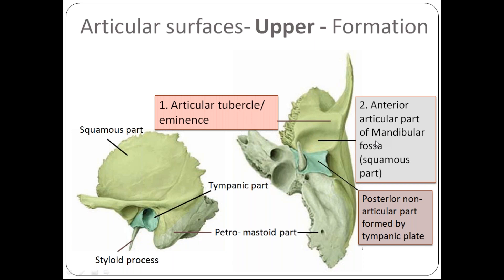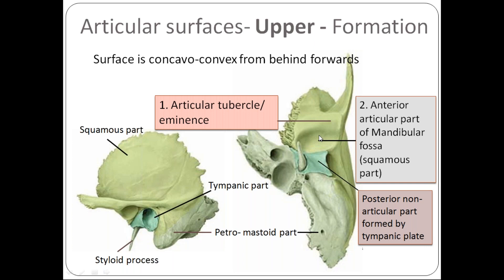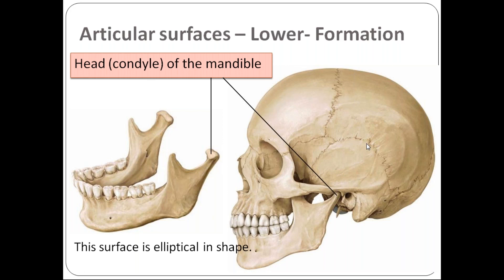The upper articular surface — formed by the articular tubercle and the articular part of the mandibular fossa — is concavo-convex from behind forwards. The lower articular surface is formed by the head or condyle of the mandible, which is elliptical in shape and articulates with the mandibular fossa. The articular surfaces are covered by fibrocartilage, not hyaline cartilage, making TMJ an example of an atypical synovial joint.